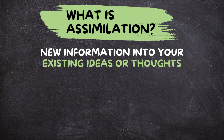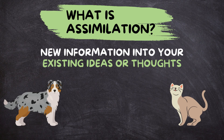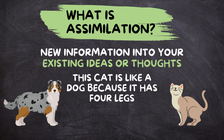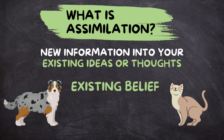For example, let's say you have a belief that all animals with four legs are dogs. Then you see a cat. Instead of changing your belief, you say, oh, this cat is like a dog because it has four legs. You've assimilated the new information into your existing belief.